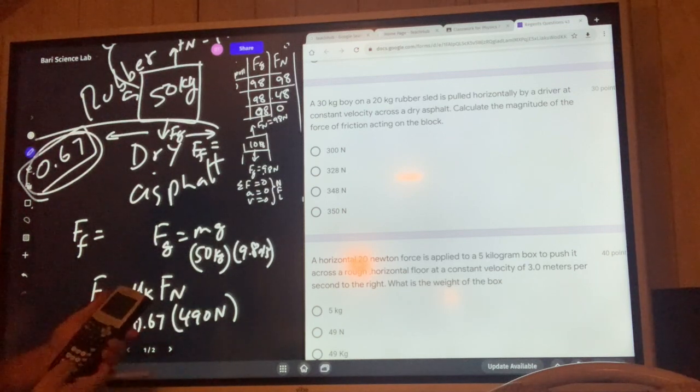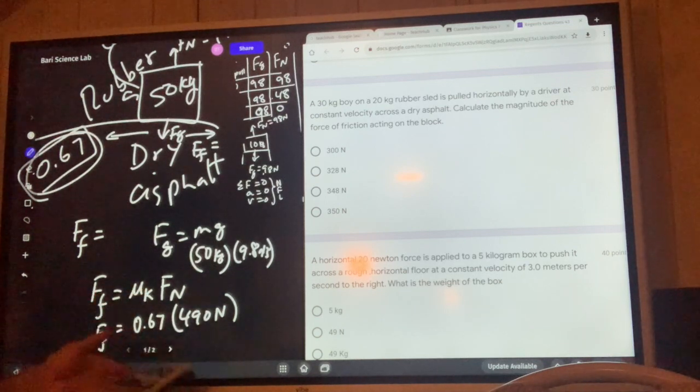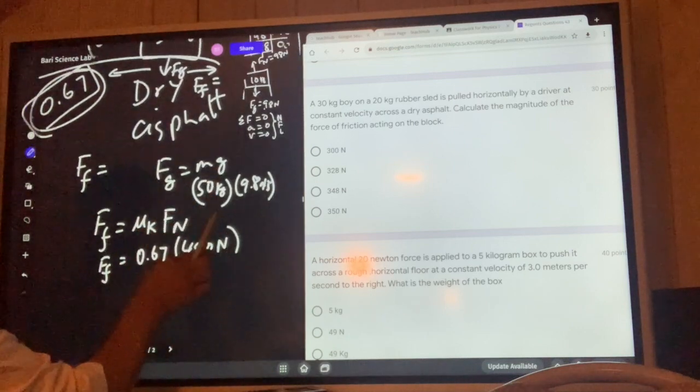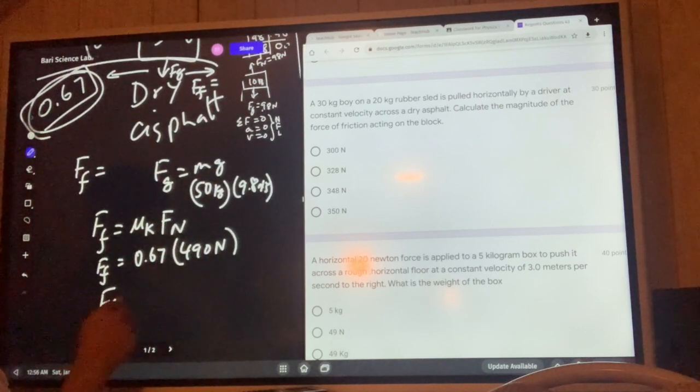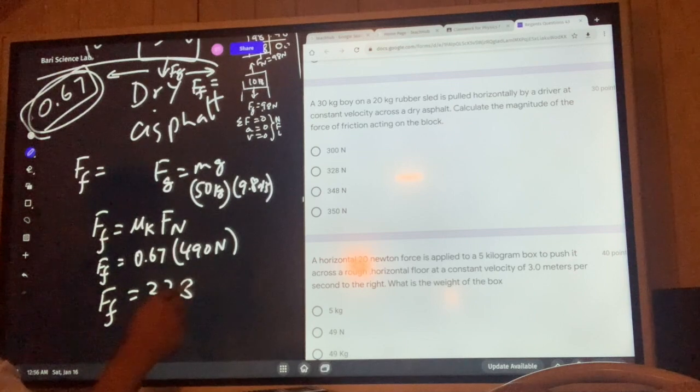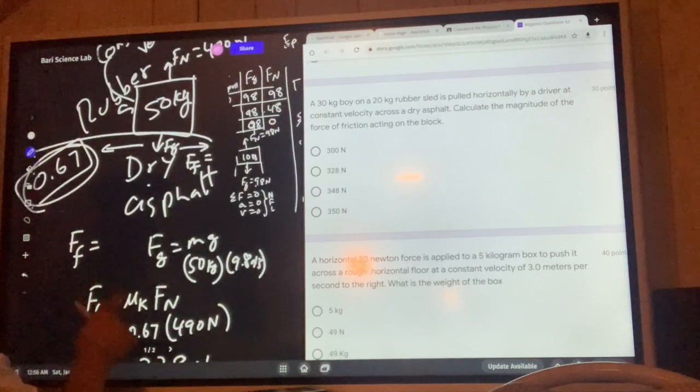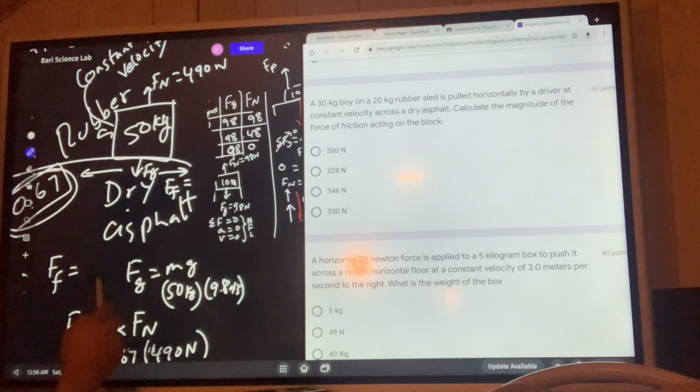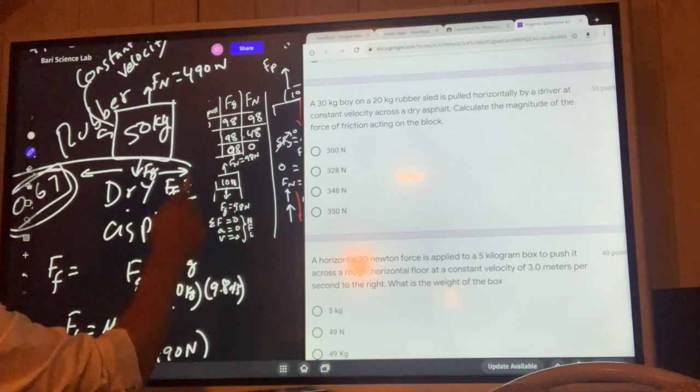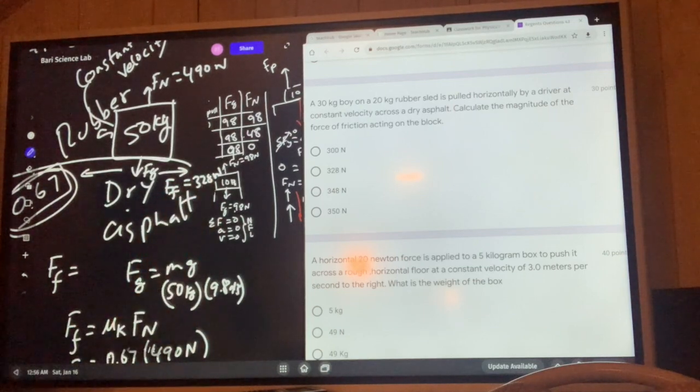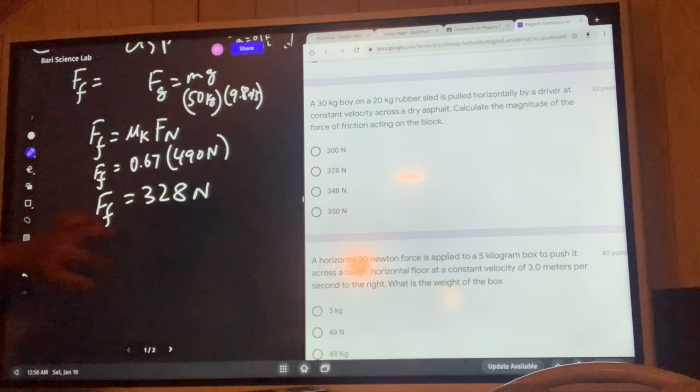So 490 times 0.67 gives you 328. Force of friction is 328 newtons. Force of friction acting on this sled is 328 newtons.